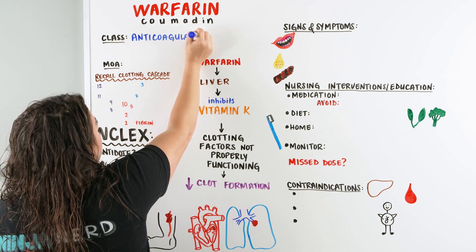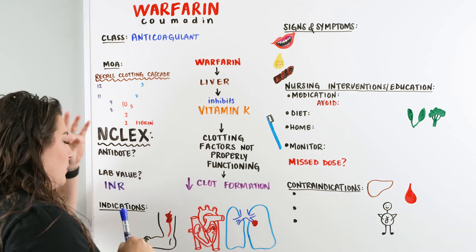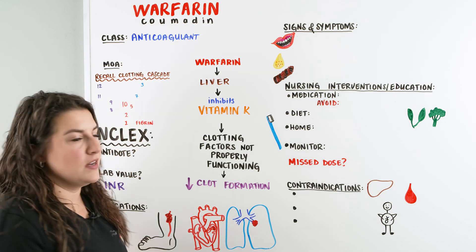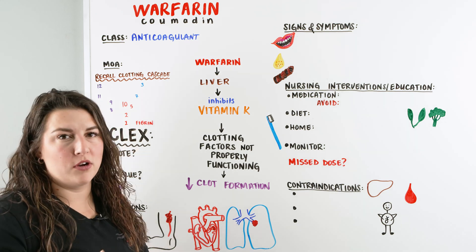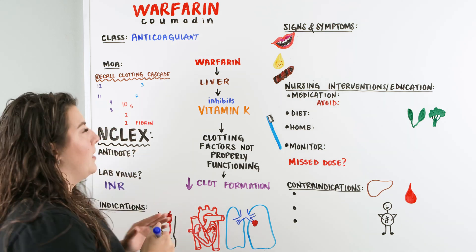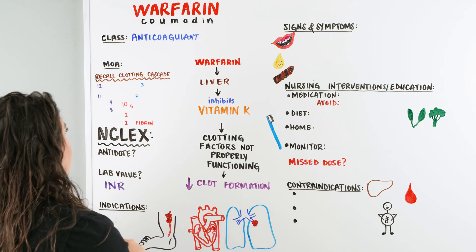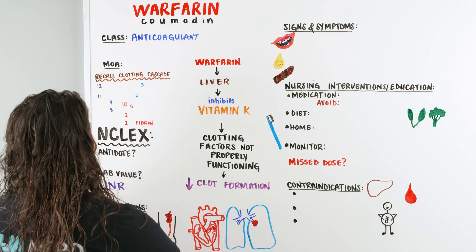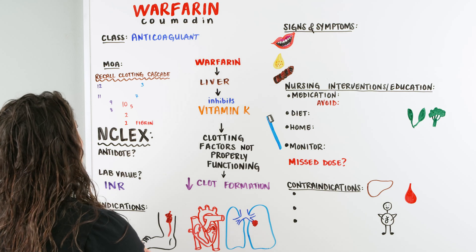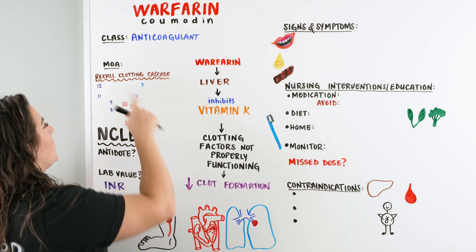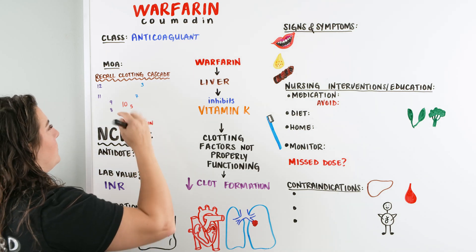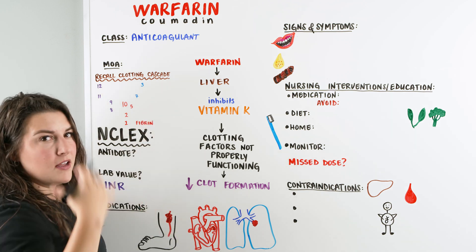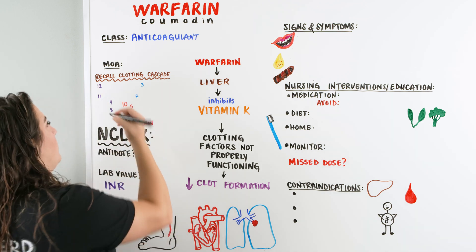So as an anticoagulant, we're going to talk about Warfarin's mechanism of action and how this works in the body. Let's recall quickly the clotting cascade and how that works. We have all these different clotting factors, and we want to remember that there's an extrinsic and an intrinsic pathway that we can go through.